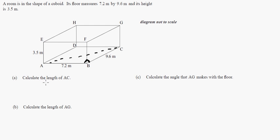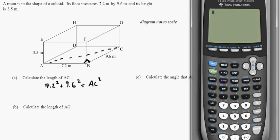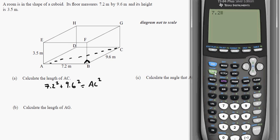So you can just use Pythagoras, and that would be the hypotenuse. So it would be 7.2 squared plus 9.6 squared equals AC squared. And so we will just break out a calculator and go 7.2 squared plus 9.6 squared equals 144. And then we'll just take the square root of that. So the square root of 144 is obviously 12.